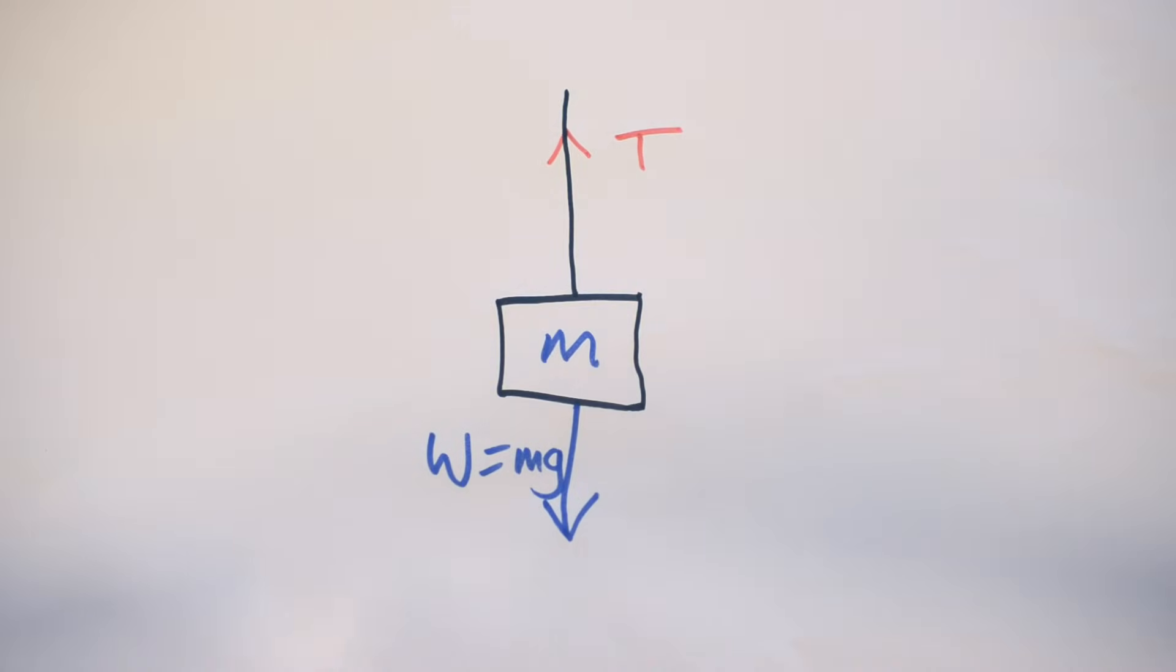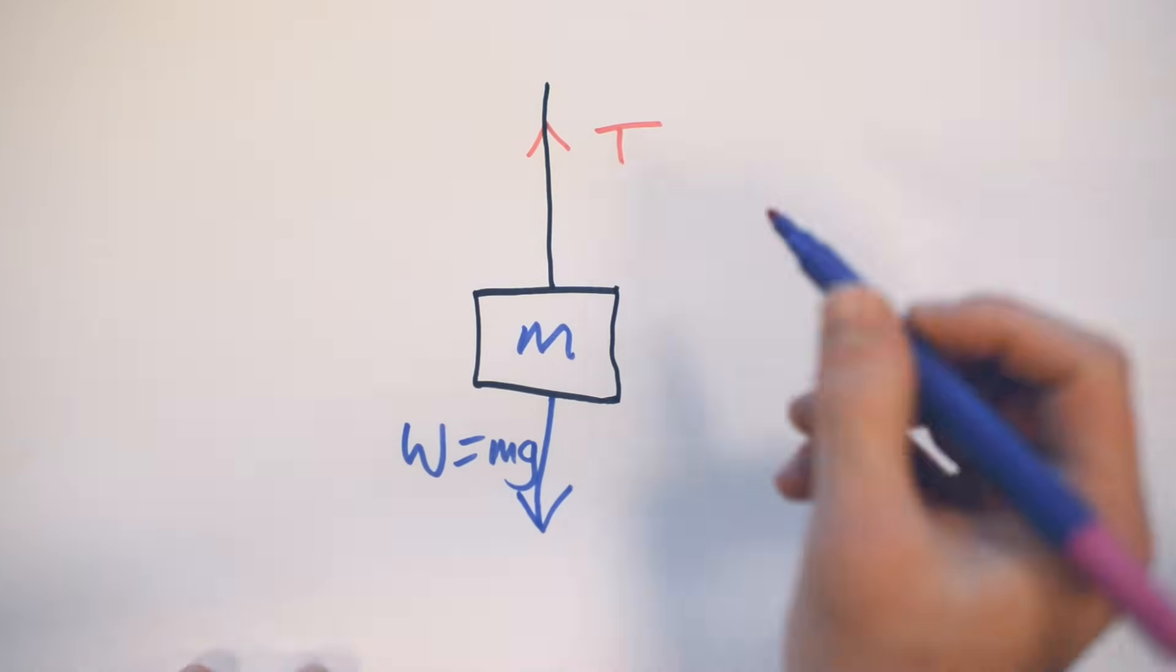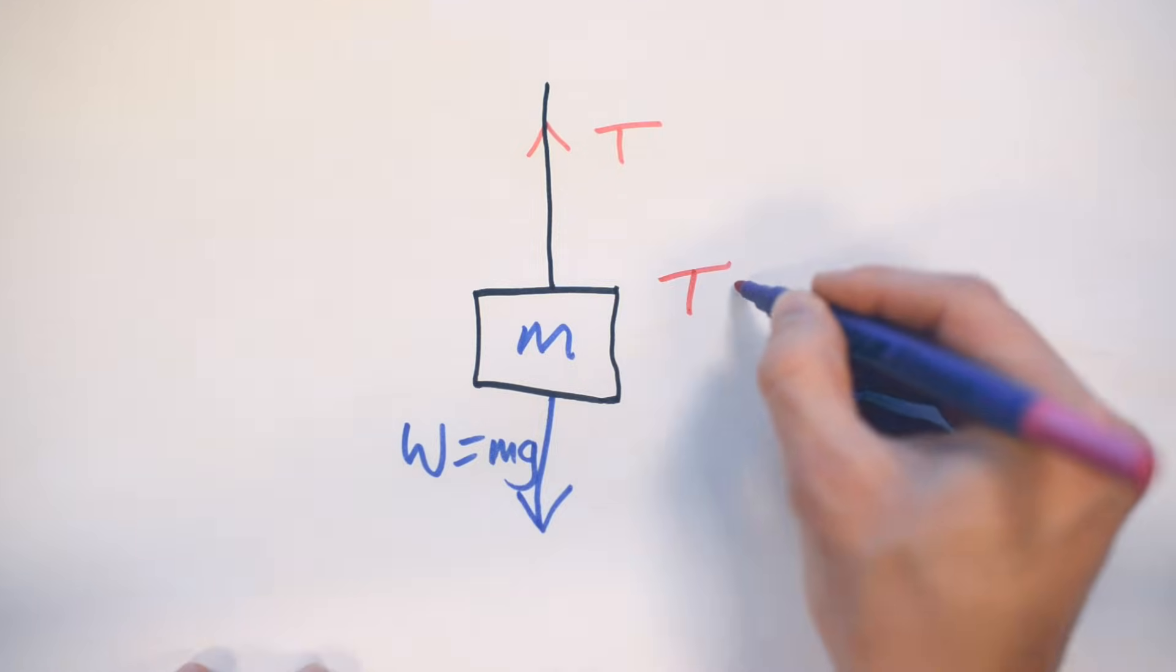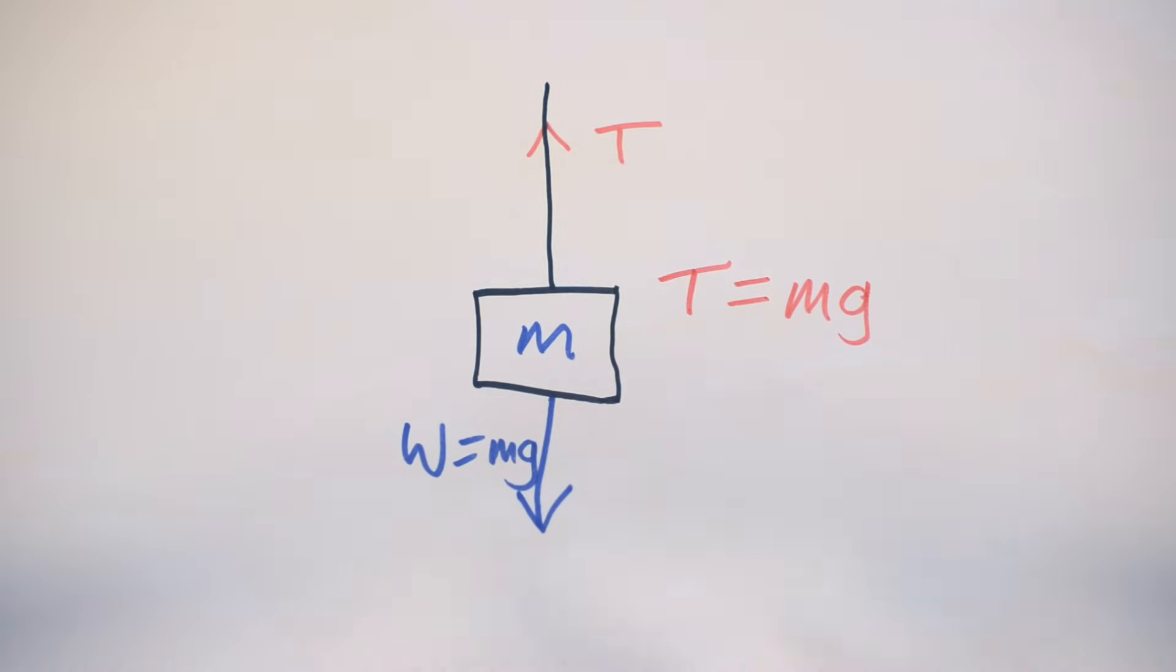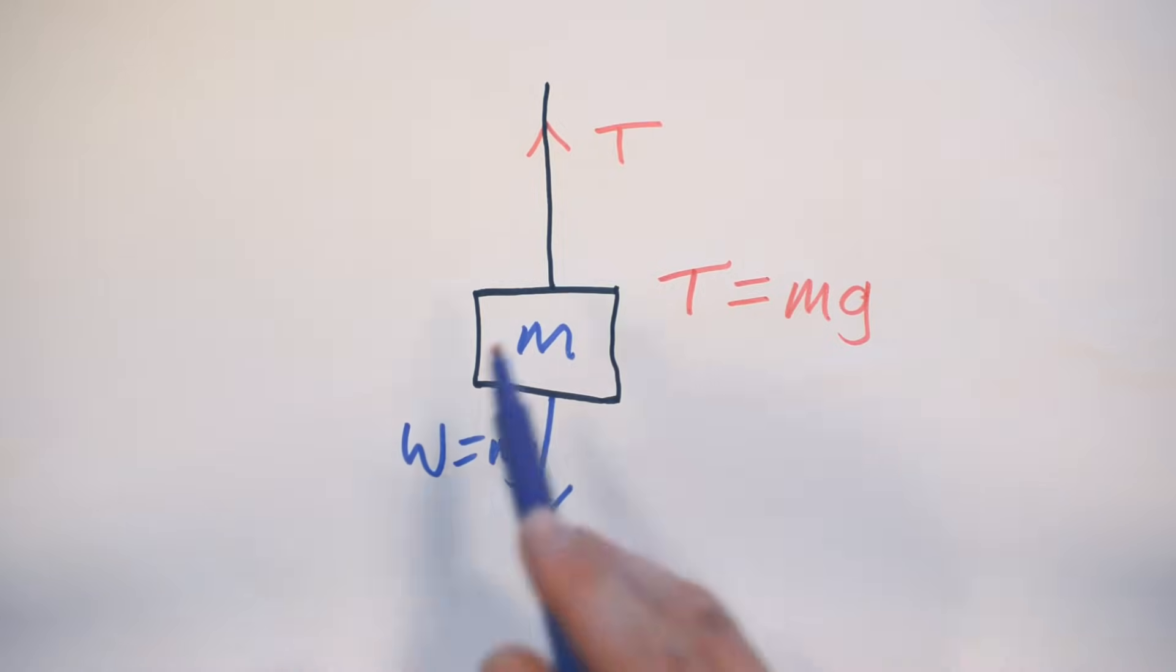Tension only exists if there's something pulling on the end of the string. And if nothing's accelerating, then of course, the tension is always going to balance that. So, in this case, if it's not accelerating, we can literally just say T equals Mg. That's nice and easy, isn't it? We're just saying that the tension that's supporting this mass has to equal the weight pulling it downwards.